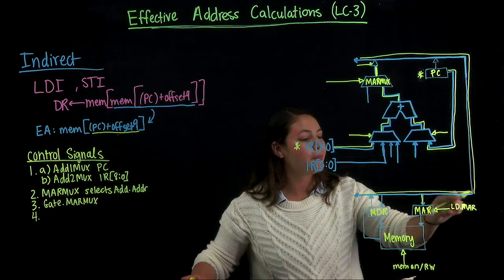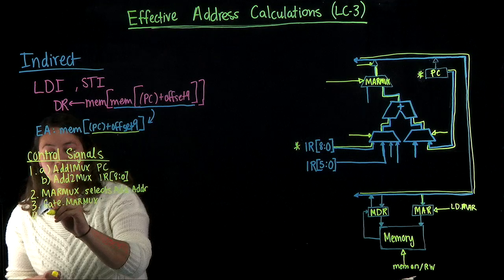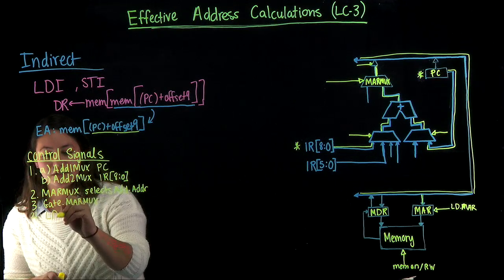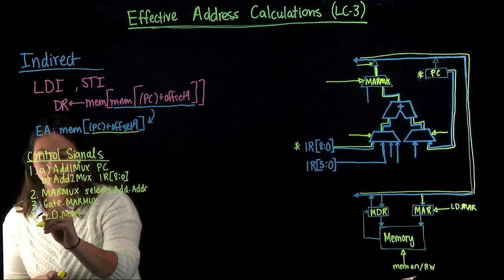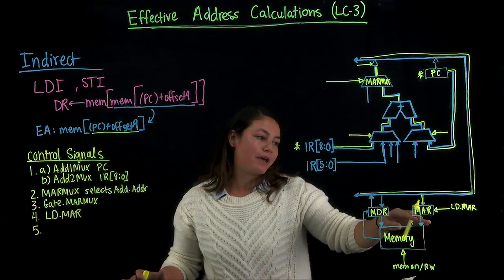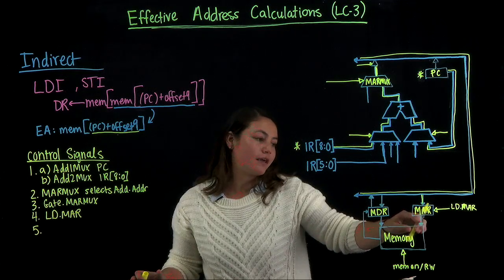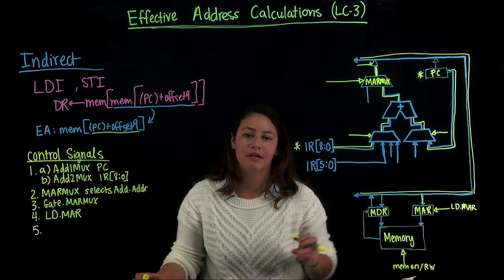To read from memory, we need to load that value into the MAR. So the only control signal we need to do that would be to write enable the MAR. Once we've write enabled the MAR, we have our address in the MAR, and we can send a control signal to memory to enable it for reading.